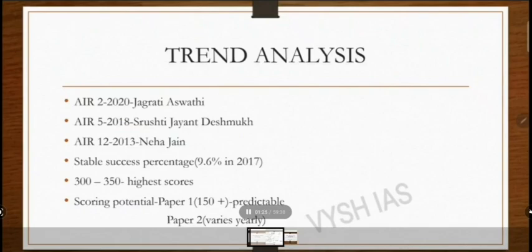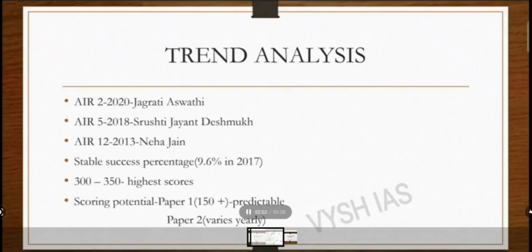If you look at all the top ranks over the years, most of the time they come from sociology. In 2020, we have Jagrati Awasthi from sociology. Looking at 2018, Srushti Jayant Deshmukh — who has become a public figure — is also from sociology and had a high score. In 2013, we have Neha Jain from sociology. Many of these toppers cleared in the first attempt itself.